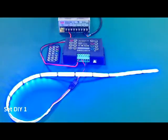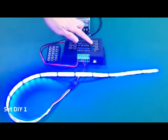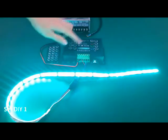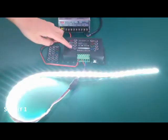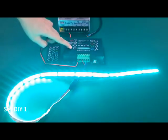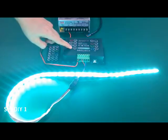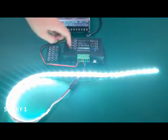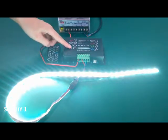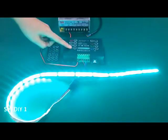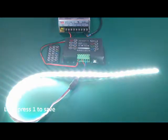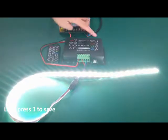Now we set a DIY color. We add a little green and a little red. It is the color we set. Long press 1.